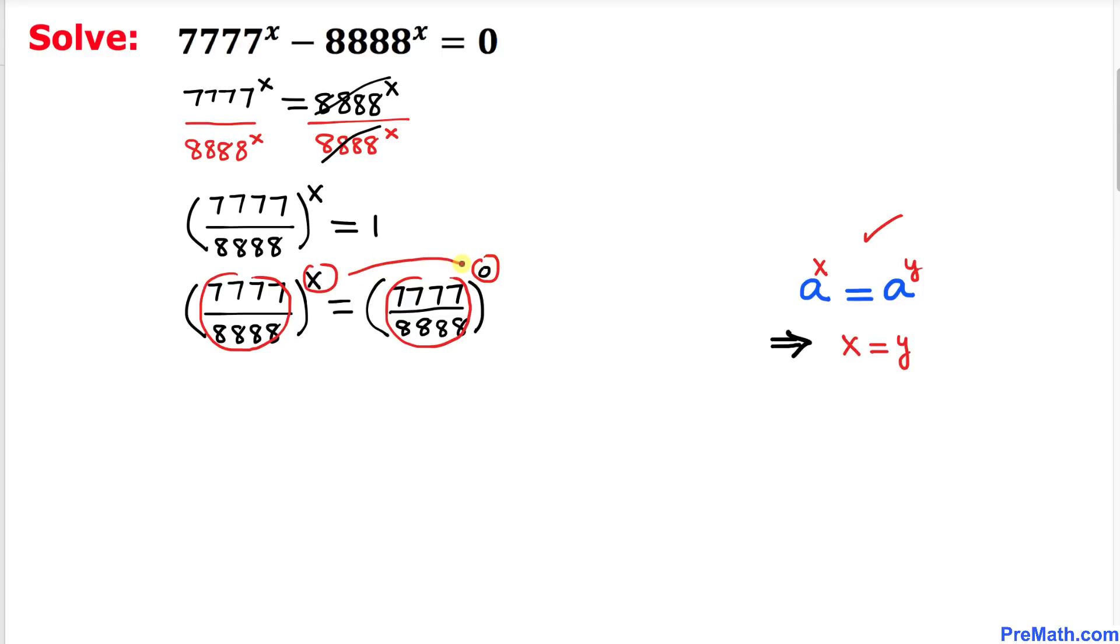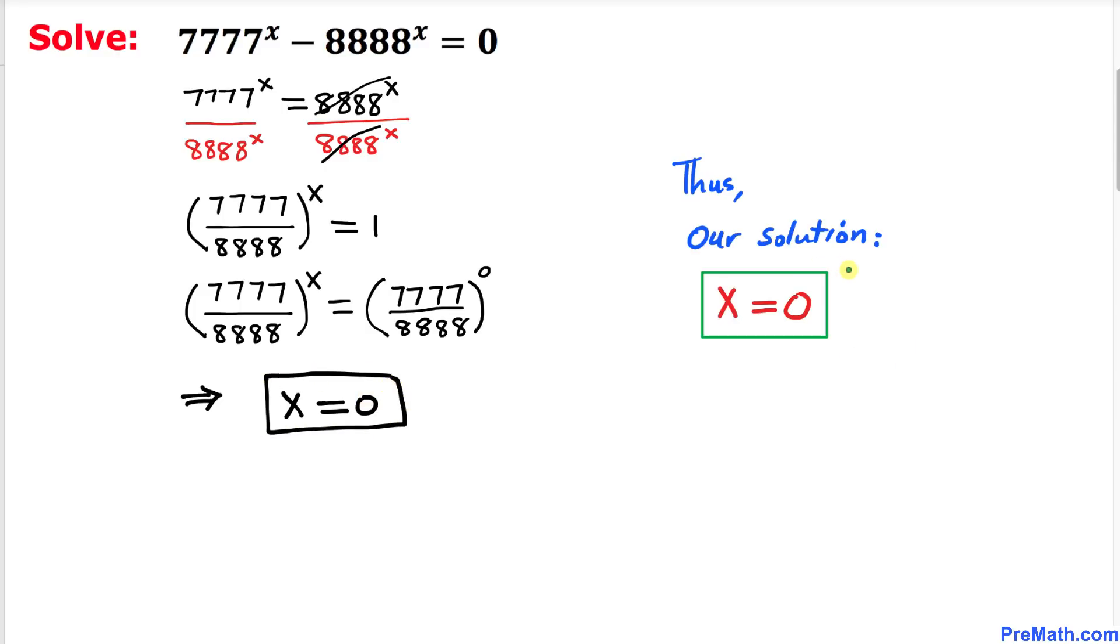That means this x is going to be equal to 0. Therefore, we conclude that our x value turns out to be equal to 0, and that is our solution. Thus, our solution turns out to be x equal to 0.